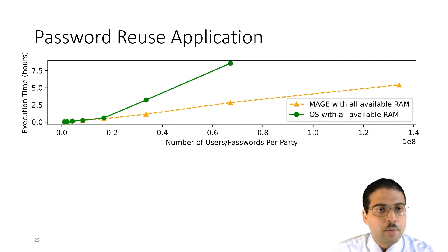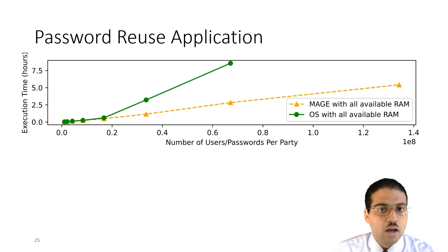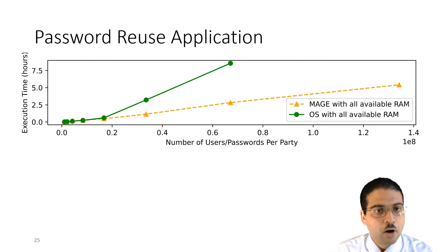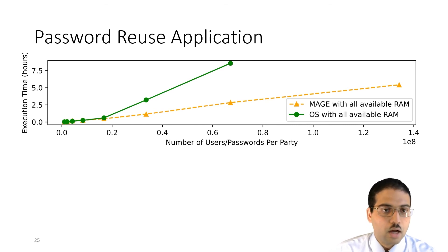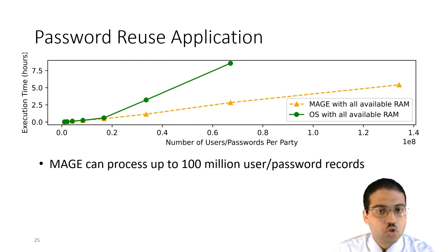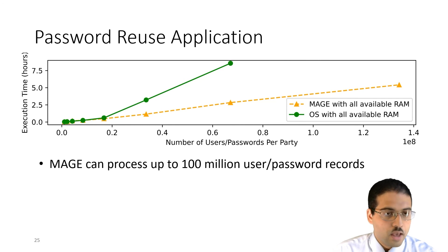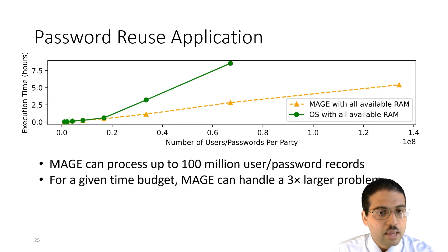We also implemented the password reuse detection application in MAGE, parallelized over four machines per party, with the two parties running on two separate cloud providers communicating over the wide area. We were able to scale it up to 100 million user-password records per party. Furthermore, for a given time budget, MAGE can handle a problem size three times larger than what OS paging could handle within that same budget.